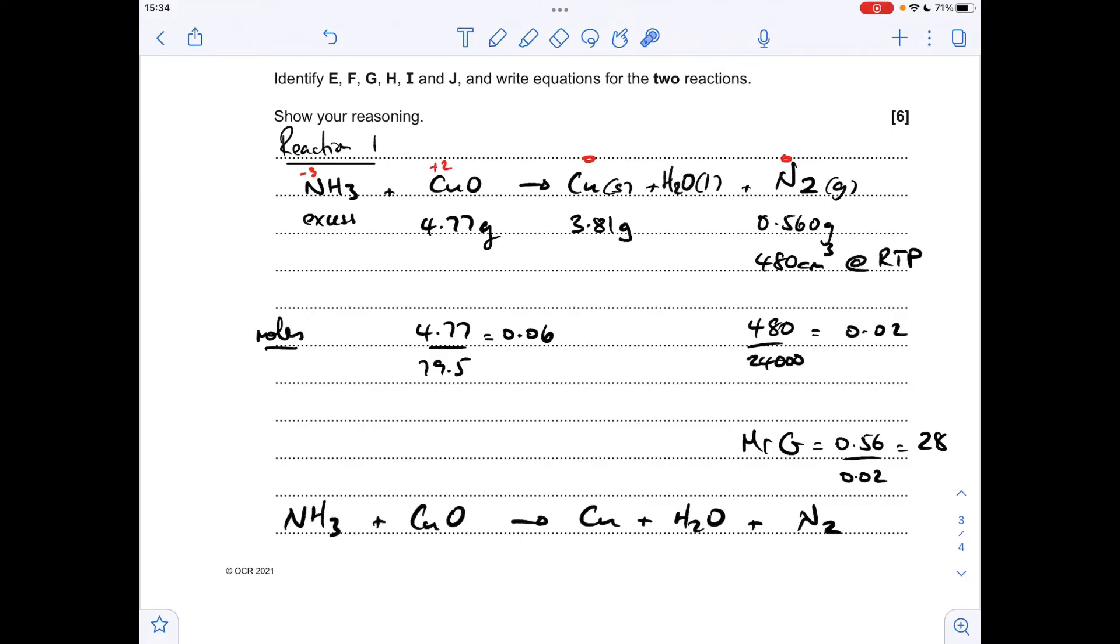For the balanced equation, we've got 0.06 moles of CuO producing 0.02 moles of N2, so a 3 to 1 mole ratio. The moles of copper produced is 0.06, same as the moles of copper oxide reduced. So we need a 3 in front of the Cu. For the remaining atoms, 1 N on the left, 2 on the right, so a 2 goes there. For oxygen, 3 on the left, only 1 on the right, so a 3 in front will sort out the equation.